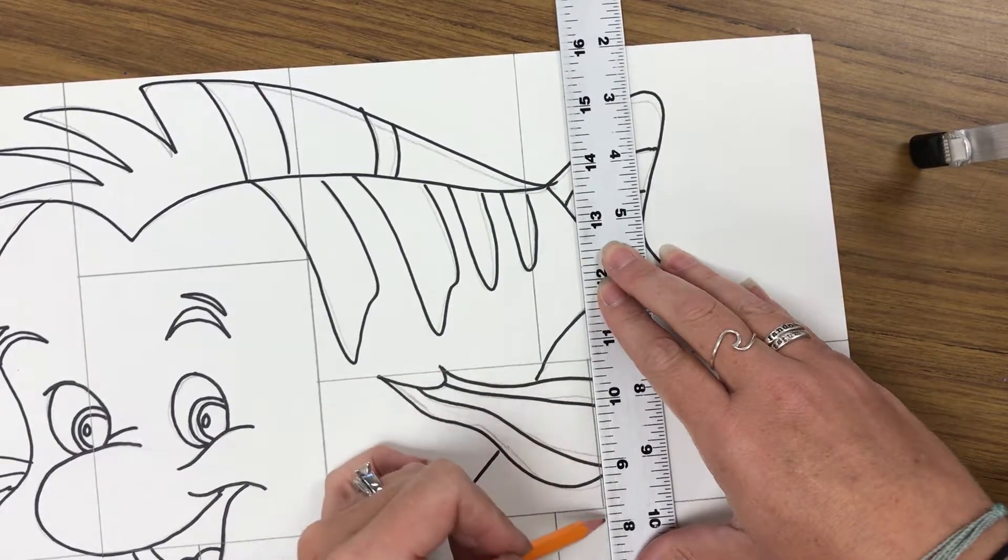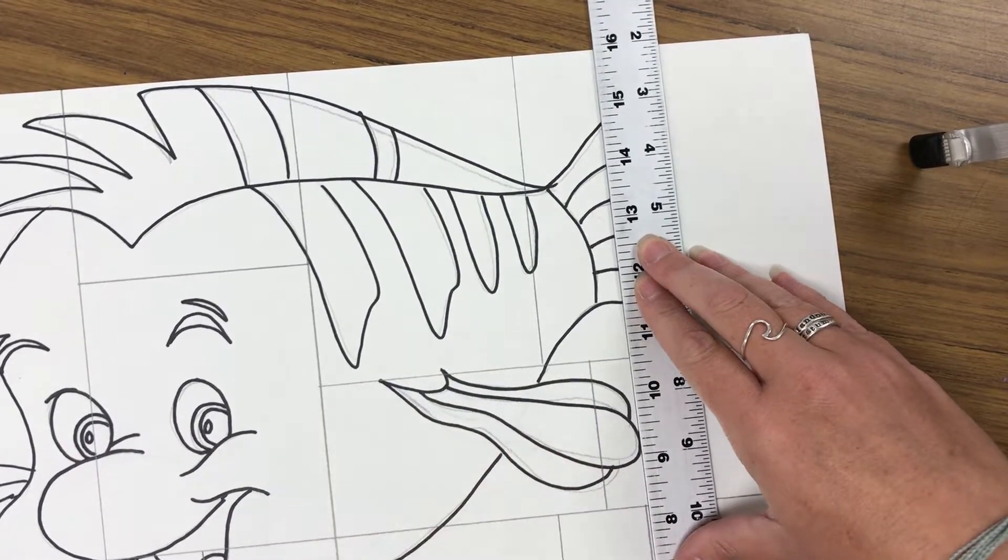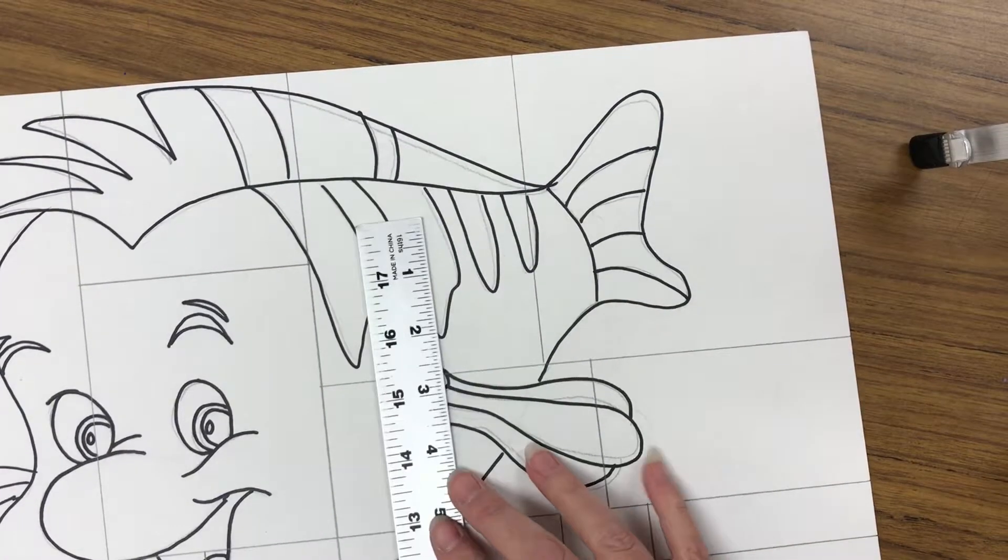Sometimes I draw part of a line, move it, and then continue the line. Then it helps me to create these different sized squares.